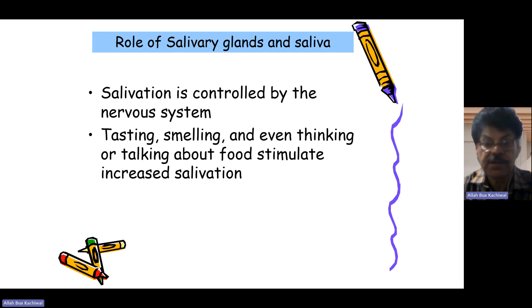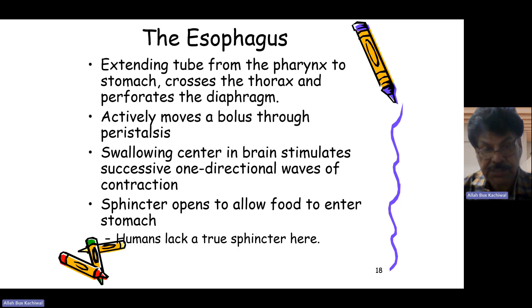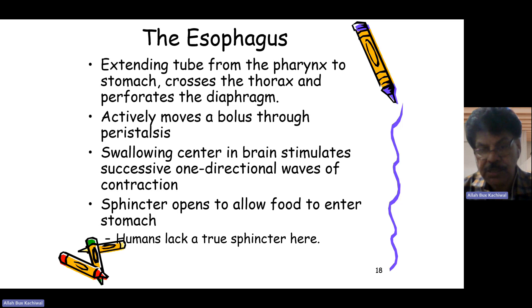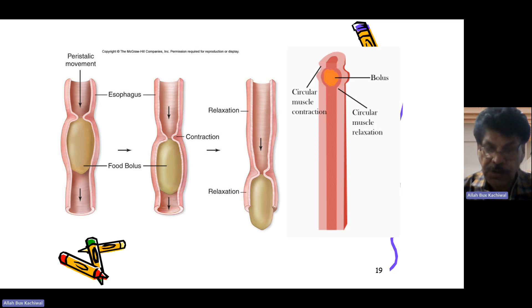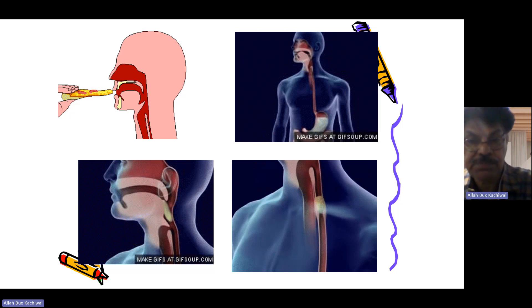Salivation is controlled by the nervous system and can be produced by tasting, smelling, or even thinking about food. The esophagus extends from the pharynx to the stomach, crosses the thorax, and perforates the diaphragm. It actively moves the bolus through peristaltic movements. The swallowing center in the brain stimulates successive unidirectional waves of contraction, and sphincters open to allow food to enter the stomach.